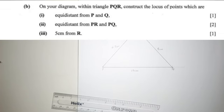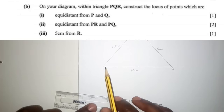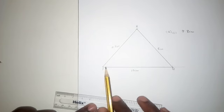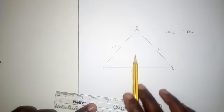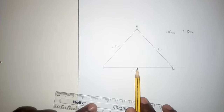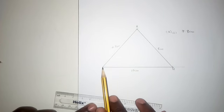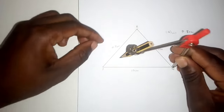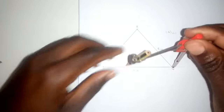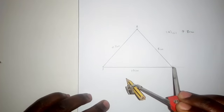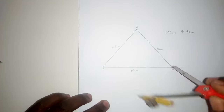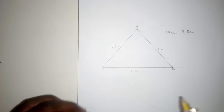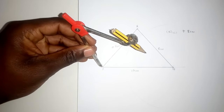Question B says: within triangle PQR, construct the locus of points equidistant from P and Q. Equidistant from P and Q — that means the perpendicular bisector line should be inside the triangle, touching the midpoint of PQ. Open the compass more than half and bisect the line from this side and also this side.